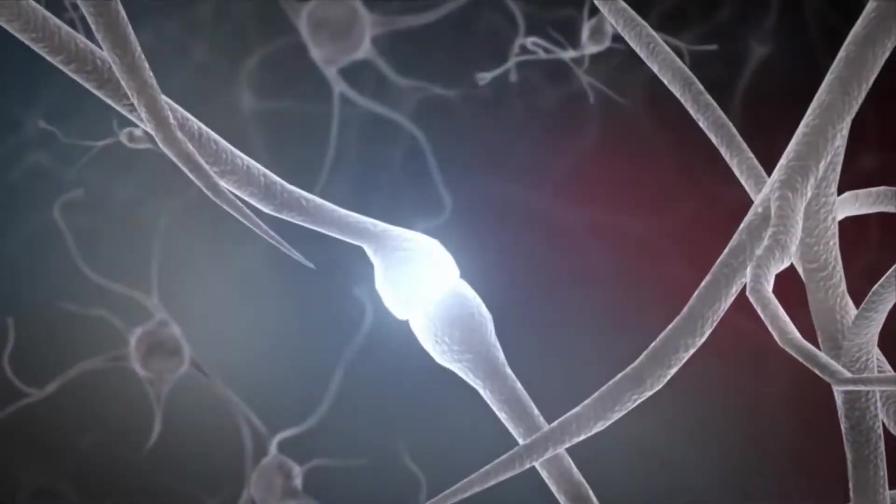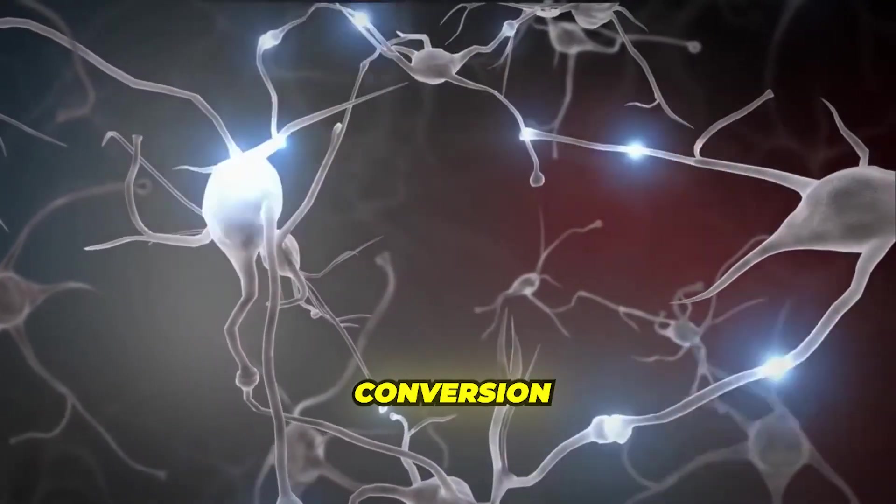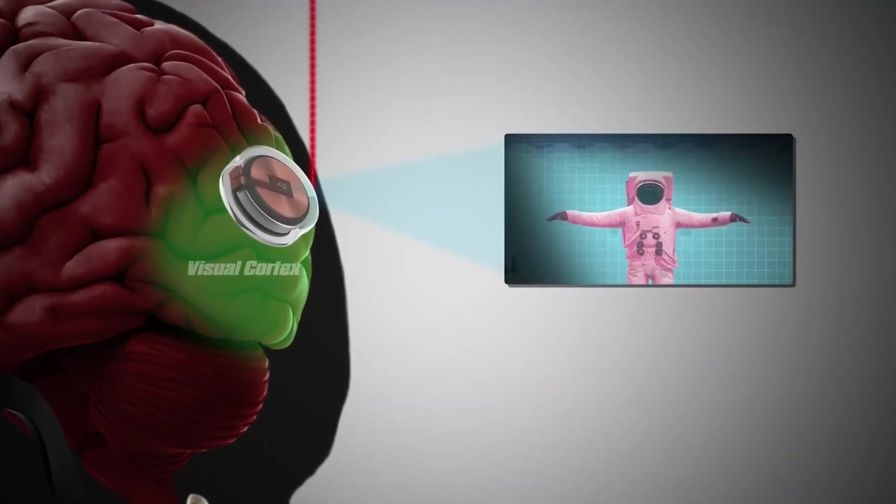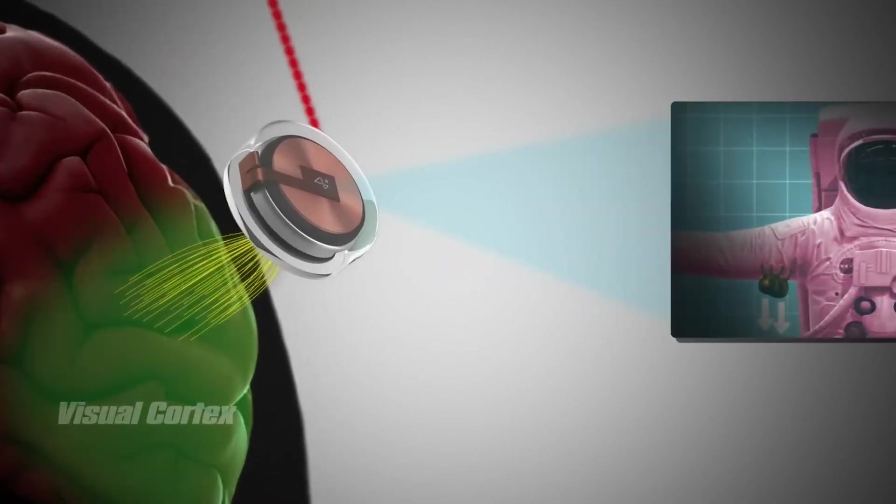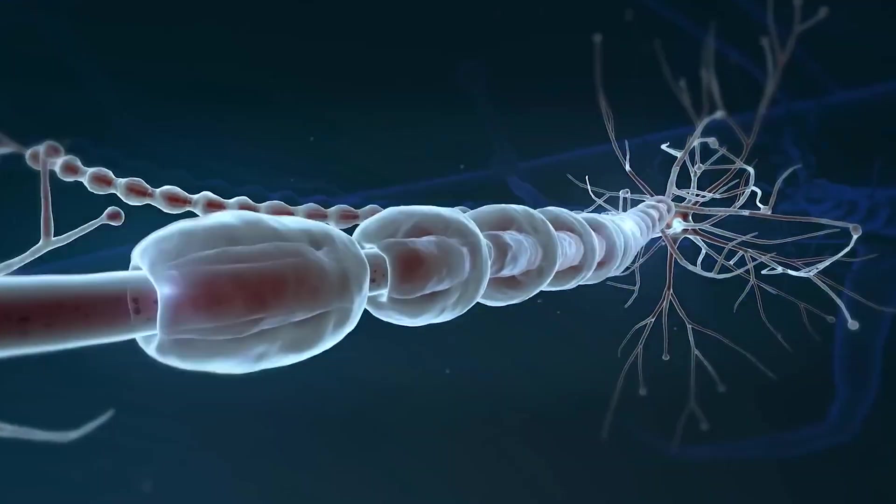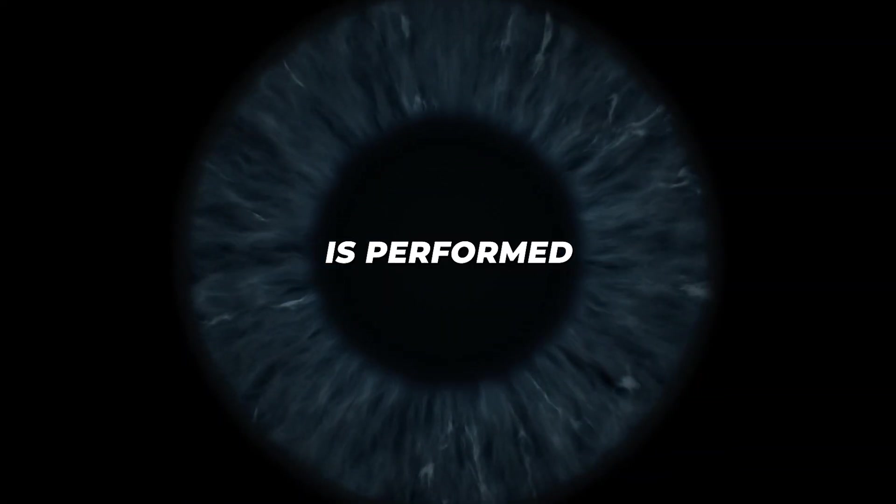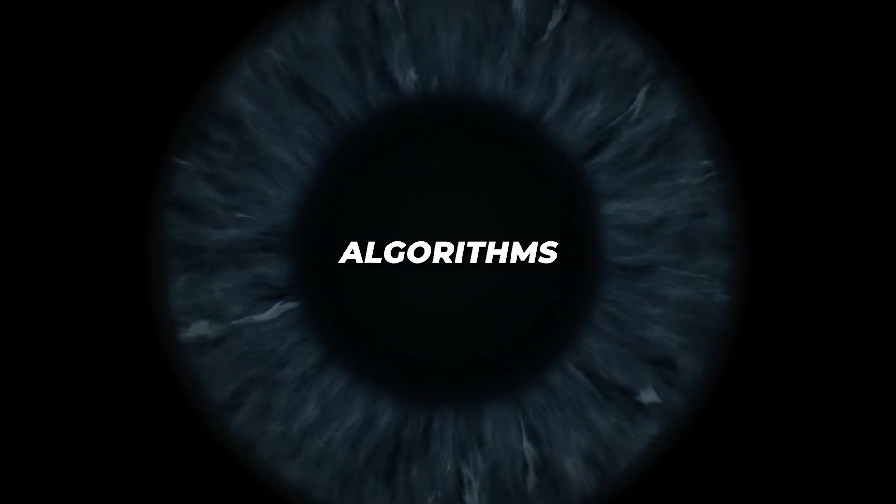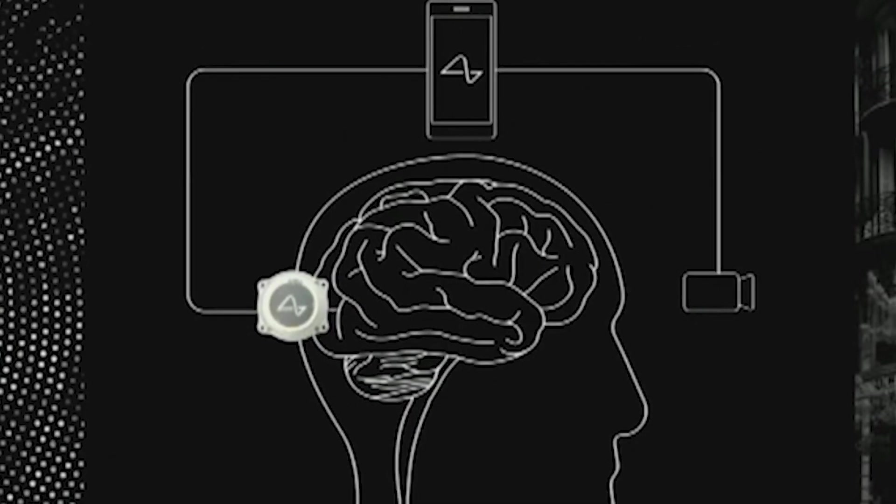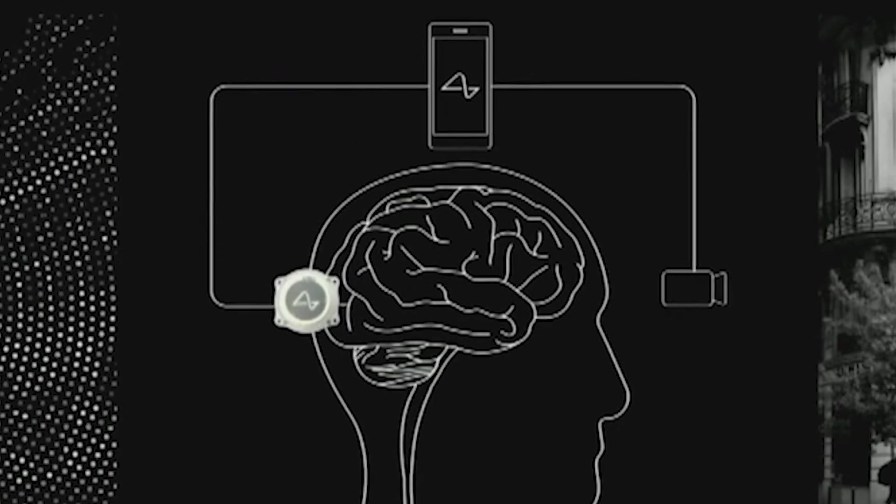Next comes the crucial step of conversion. The captured visual data is processed and transformed into a format that mimics the electrical signals naturally produced by a healthy eye and optic nerve. This conversion is performed by sophisticated algorithms running on a compact, energy-efficient chip, possibly integrated into the wearable device itself.